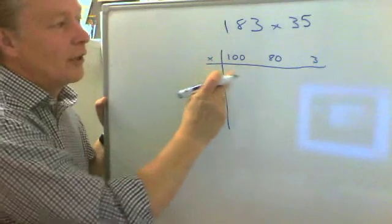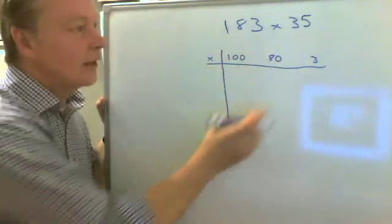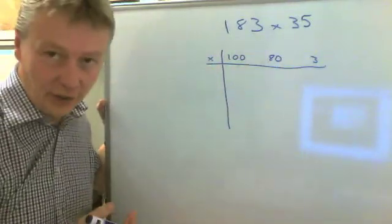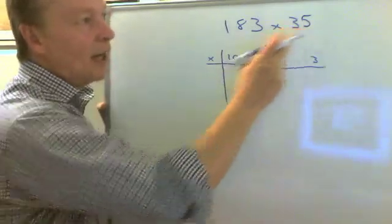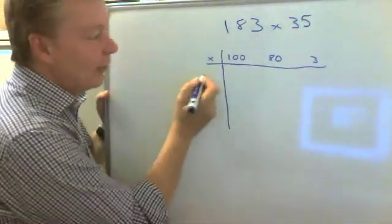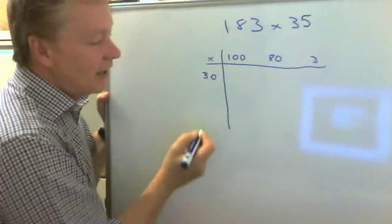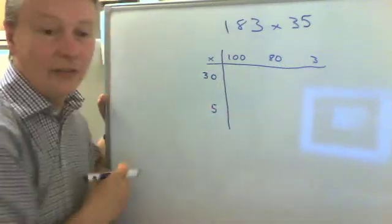So in other words, my value of 100, my value of the tens column, and my value for the units column. I'm going to then multiply that by 35, and like before, I'm going to break that down into 30 and then 5.